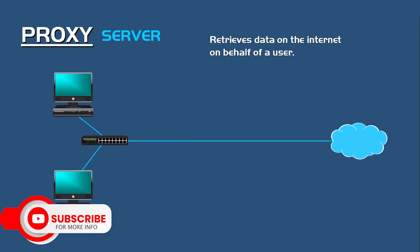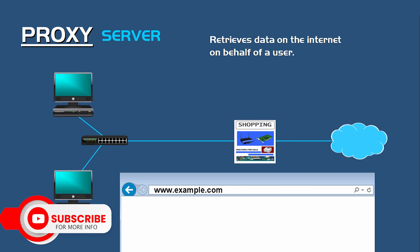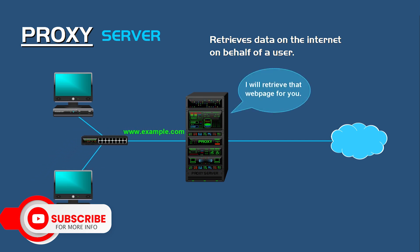Number two, proxy servers. A proxy server acts as an intermediary between the device and the internet. Your requests go through the proxy server, which then forwards the requests, making it appear as if they originated from the proxy's IP address. There are various types of proxies, including HTTP proxies and SOCKS proxies.